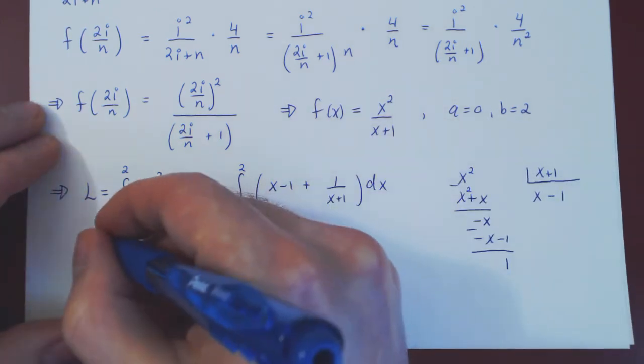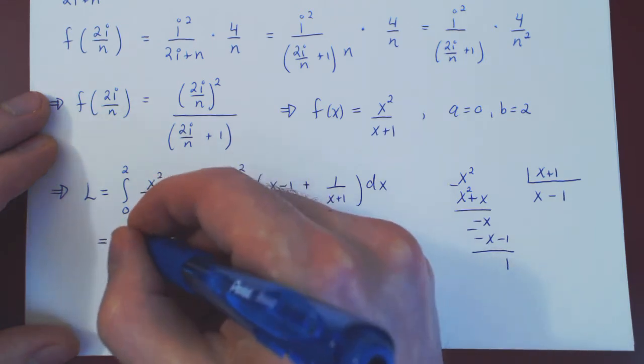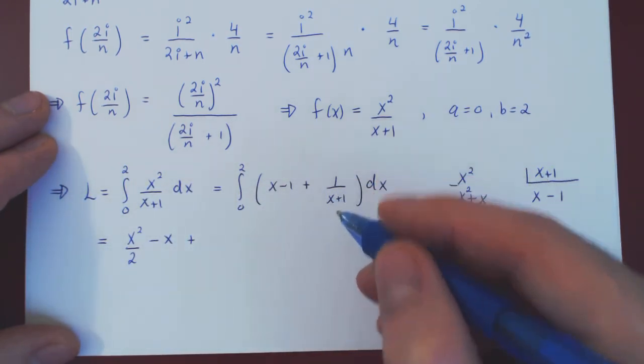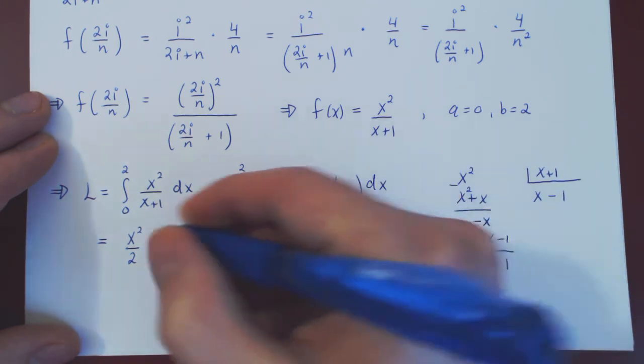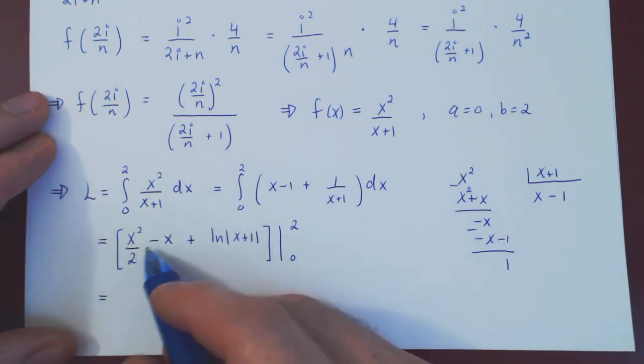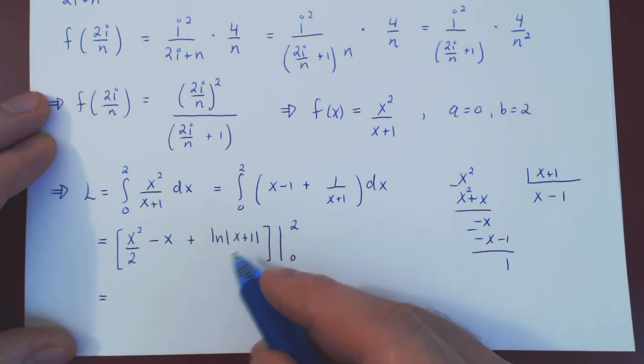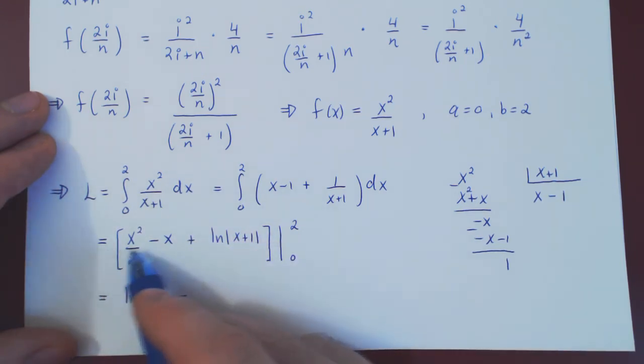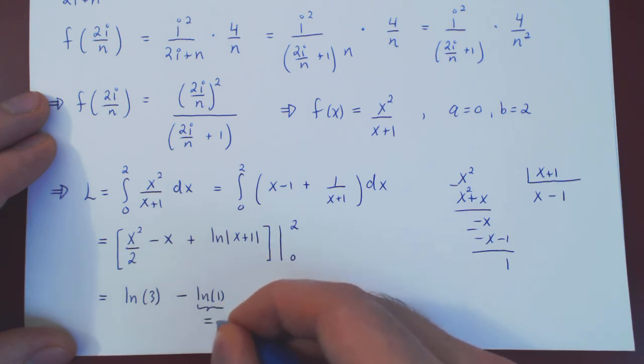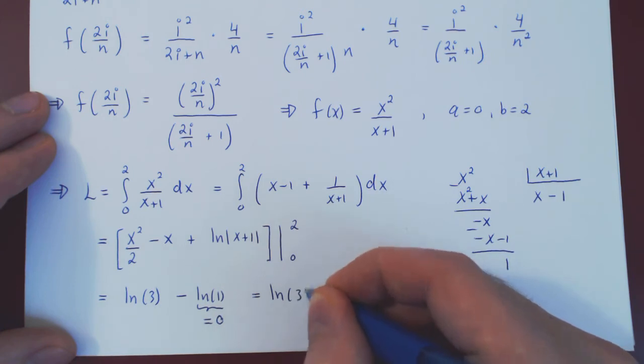And now the integration is basically trivial. We first find our anti-derivative. So, the power rule, x squared over 2. Minus x. Plus, and the integral of 1 over x plus 1 is simply the ln of x plus 1. In absolute value. This is our anti-derivative. Which we evaluate between 0 and 2. And then we just plug it in. If we replace x by 2. We'll have 2 squared. Which is 4 over 2 is 2. Minus 2. This is 0. Plus, the ln of 2 plus 1, 3. So, all we're left with is the ln of 3. Again, the ln of 2 plus 1. Minus the anti-derivative at 0. Which will give us 0 minus 0 plus the ln of 0 plus 1. Which is the ln of 1. That's all we're left over with. But the ln of 1 is also equal to 0. So, in the end, we're left with the ln of 3 as our final answer.